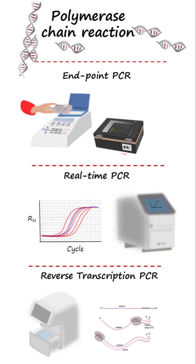Polymerase chain reaction, that is PCR — whether endpoint PCR, real-time PCR, reverse transcription PCR, or digital PCR — are all used to amplify regions of interest in the nucleic acid so that it can be detected and, in some types of PCR, the initial quantity obtained.